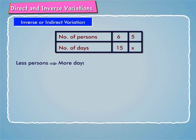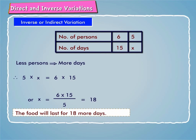Less persons implies more days. It is a case of indirect variation. So, the product of persons and days is constant. Therefore, 5 times x equals 6 times 15, or x equals 6 times 15 by 5 equals 18. Hence, the food will last for 18 more days.